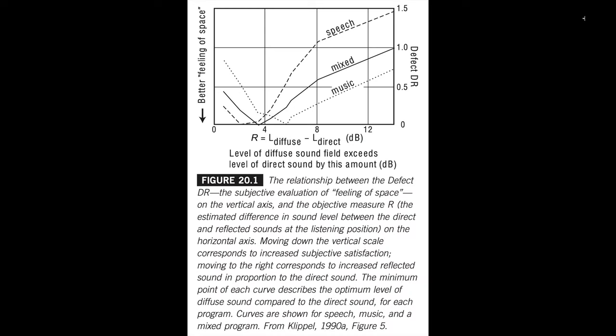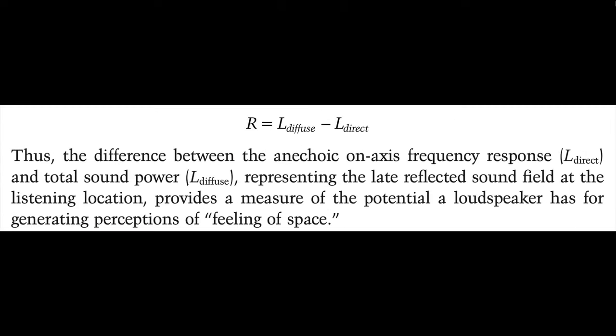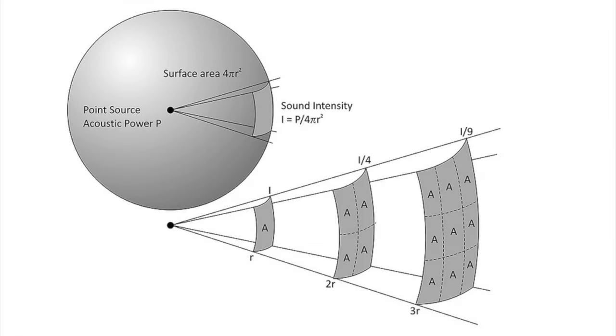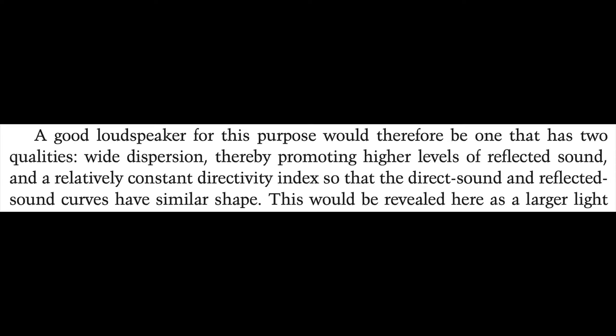If you have been watching my videos for a long time, you have likely seen this image quite a few times. This shows the preferred level of R for speech, mixed, and music. For music, we want the level of diffused sound to be 5dB higher than the level of direct sound, and the level of diffused sound represents sound power. Sound power describes a sound wave propagating away from a source uniformly in all directions. Based on the findings, let's read what Floyd Toole stated.